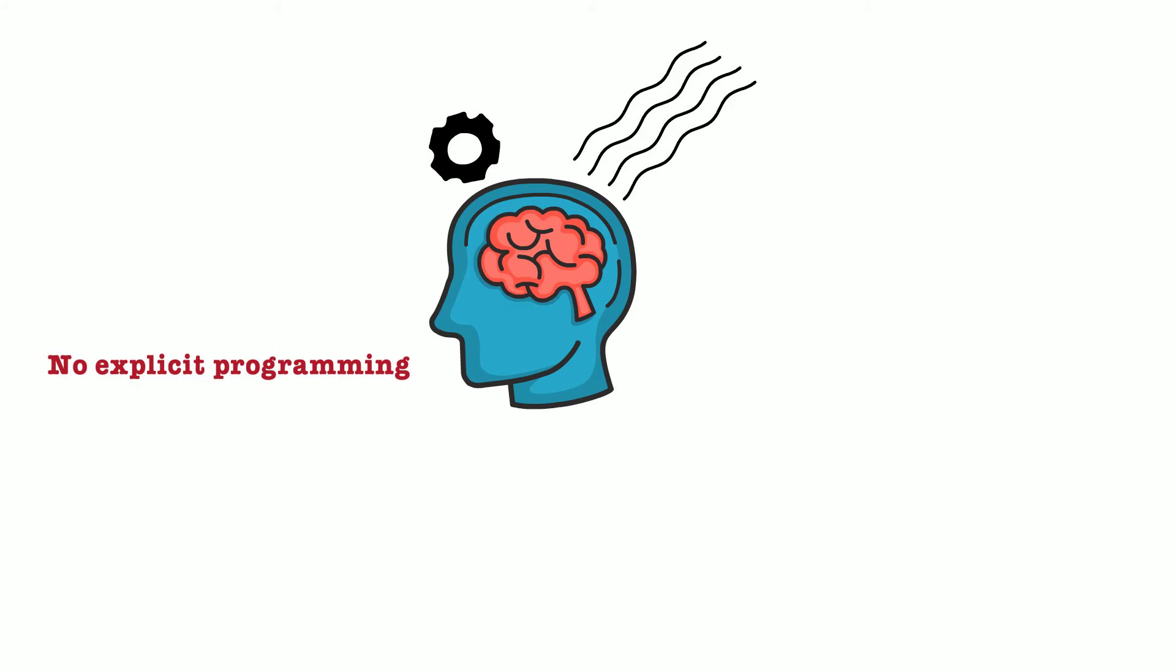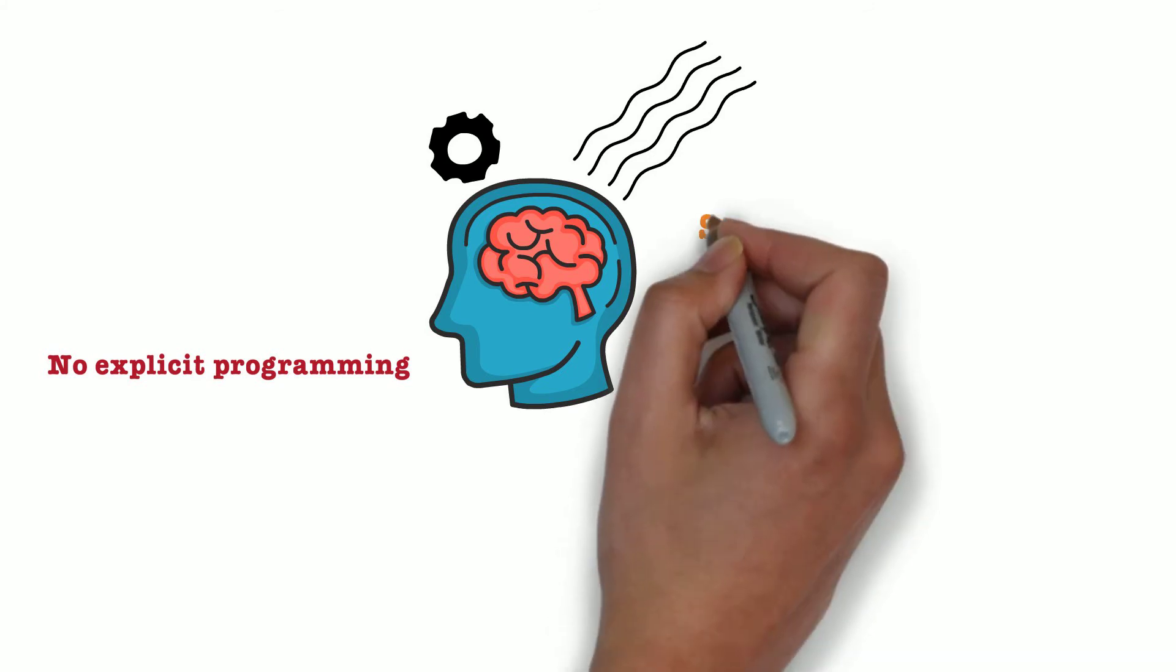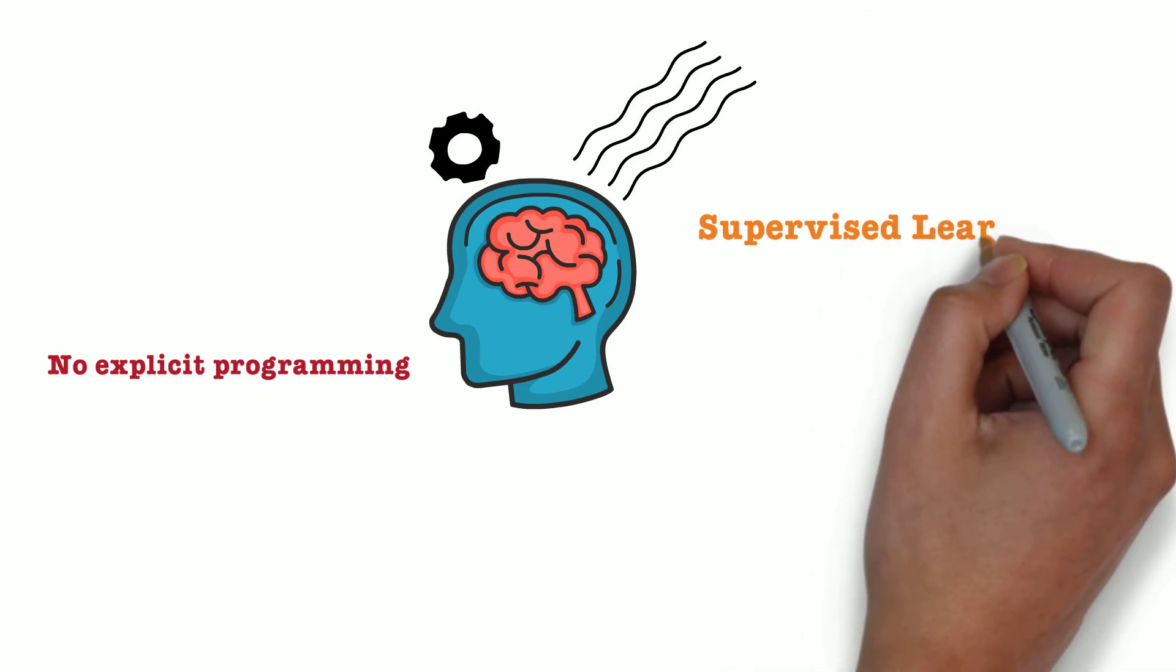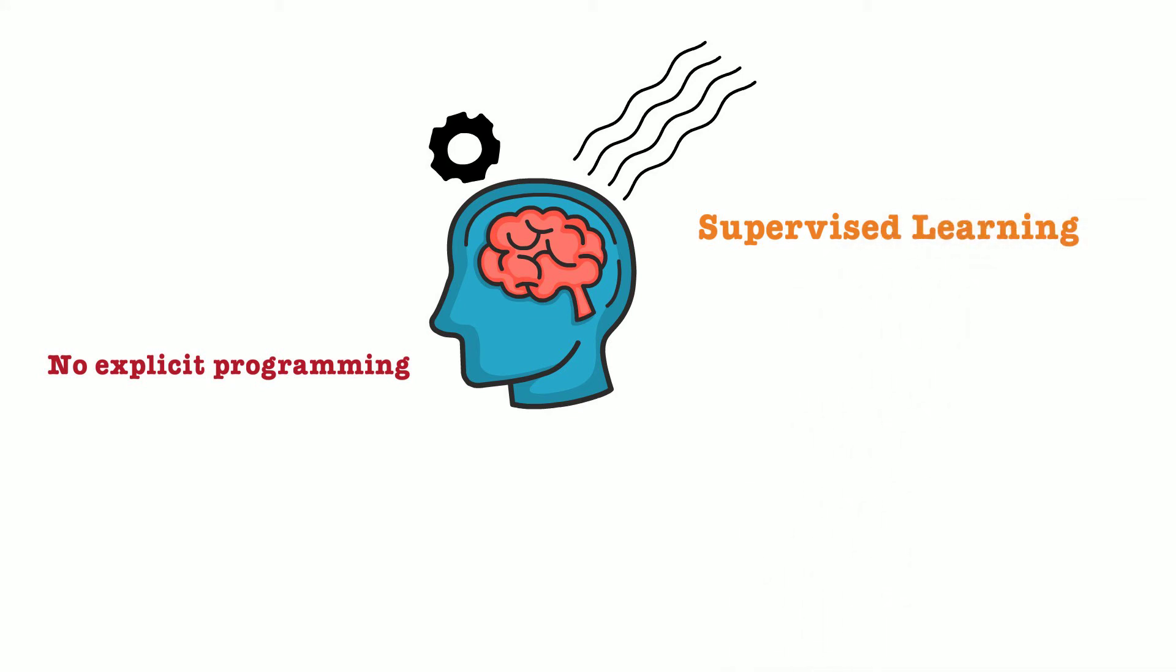Let us now bite into the meat, or if you are a vegetarian, bite into the tofu of machine learning. We can generally classify machine learning into these three types: supervised learning, unsupervised learning, and reinforcement learning.